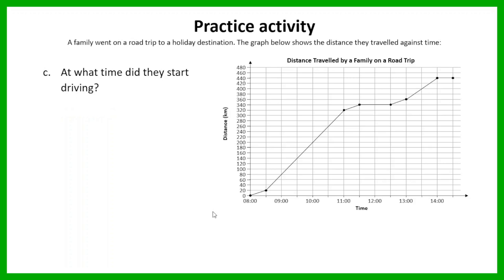The next question: at what time did they start driving? If you look at the graph at the very beginning, the first time on the graph is 8 o'clock, and you can see that from that point their distance is already changing. So they are starting to travel at 8 o'clock — the answer is 8 o'clock.